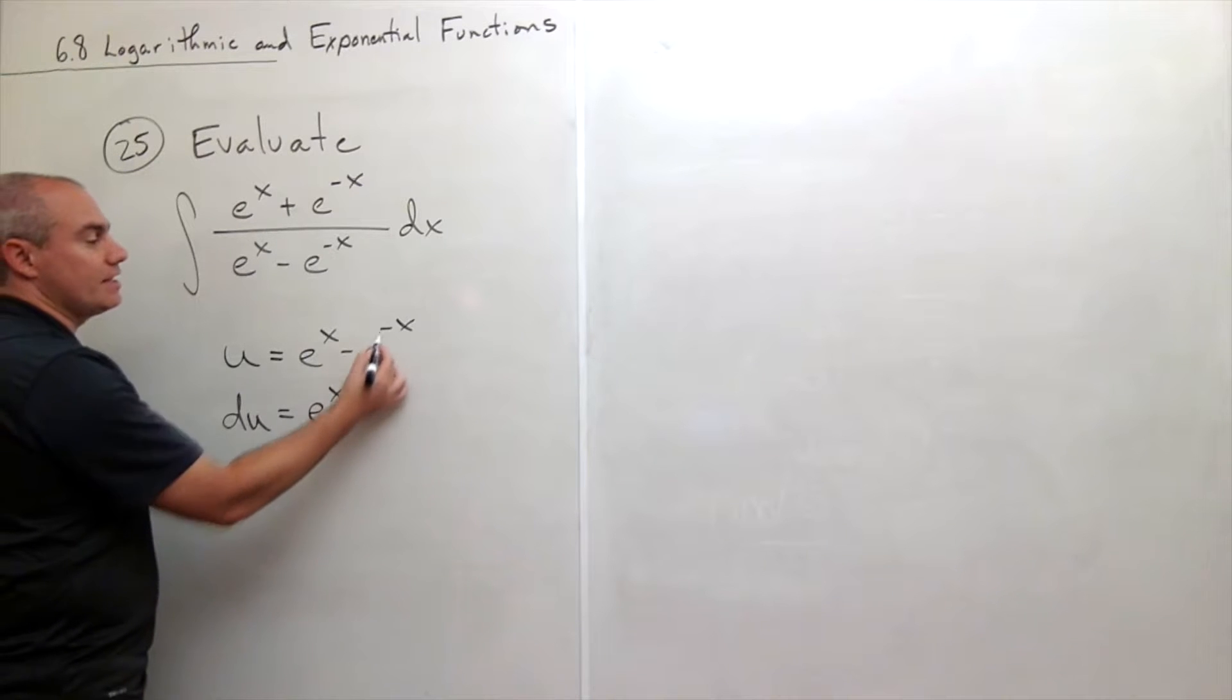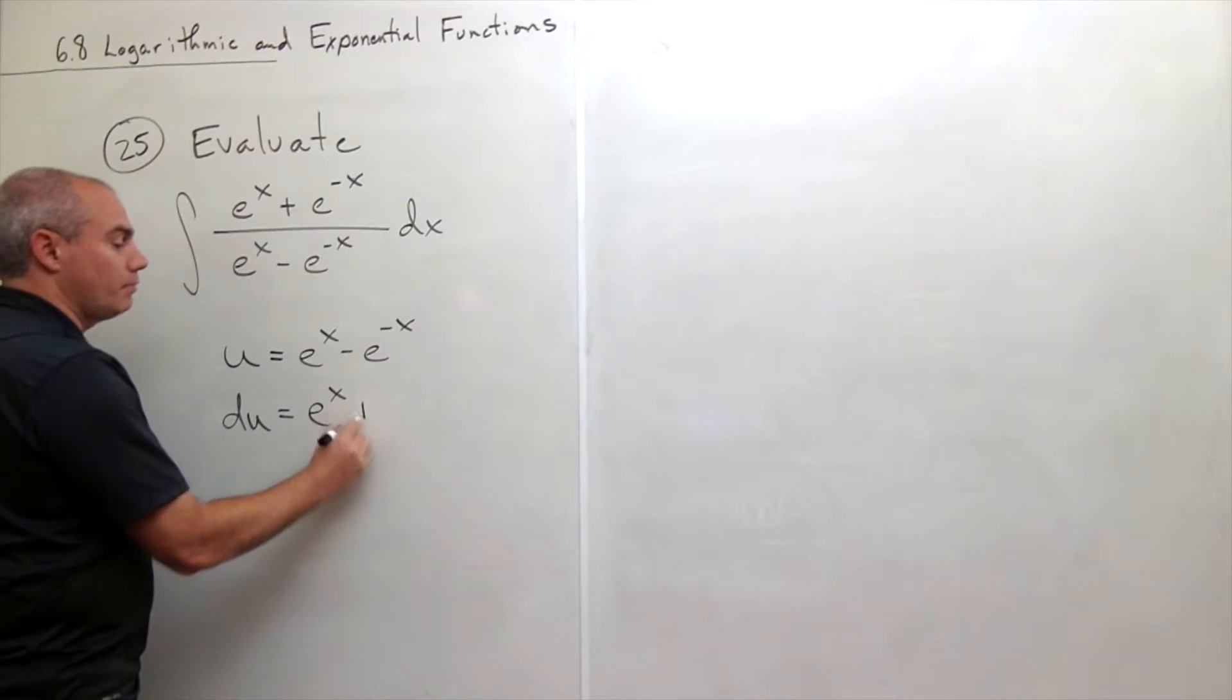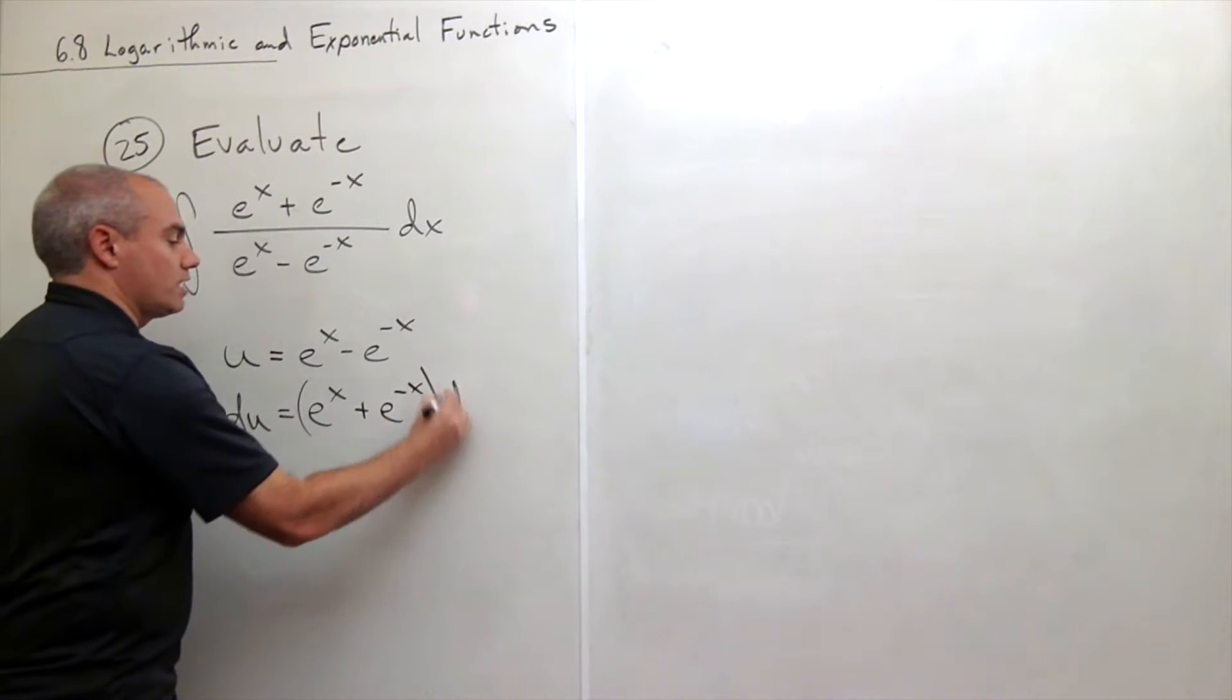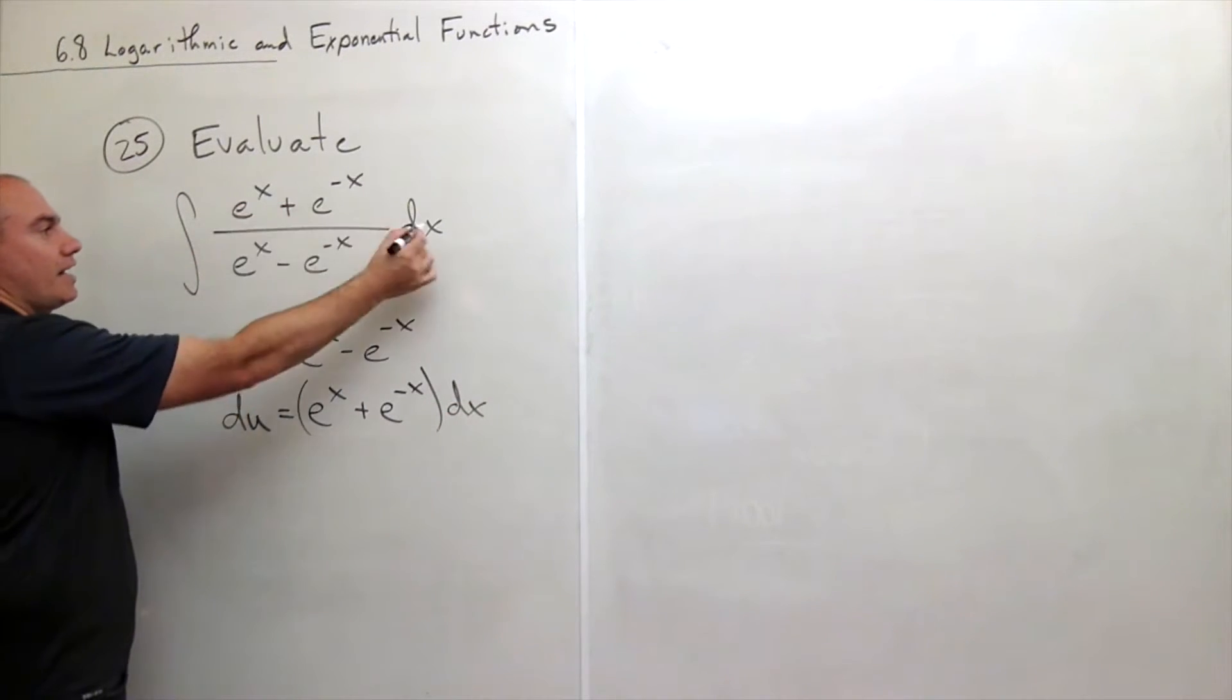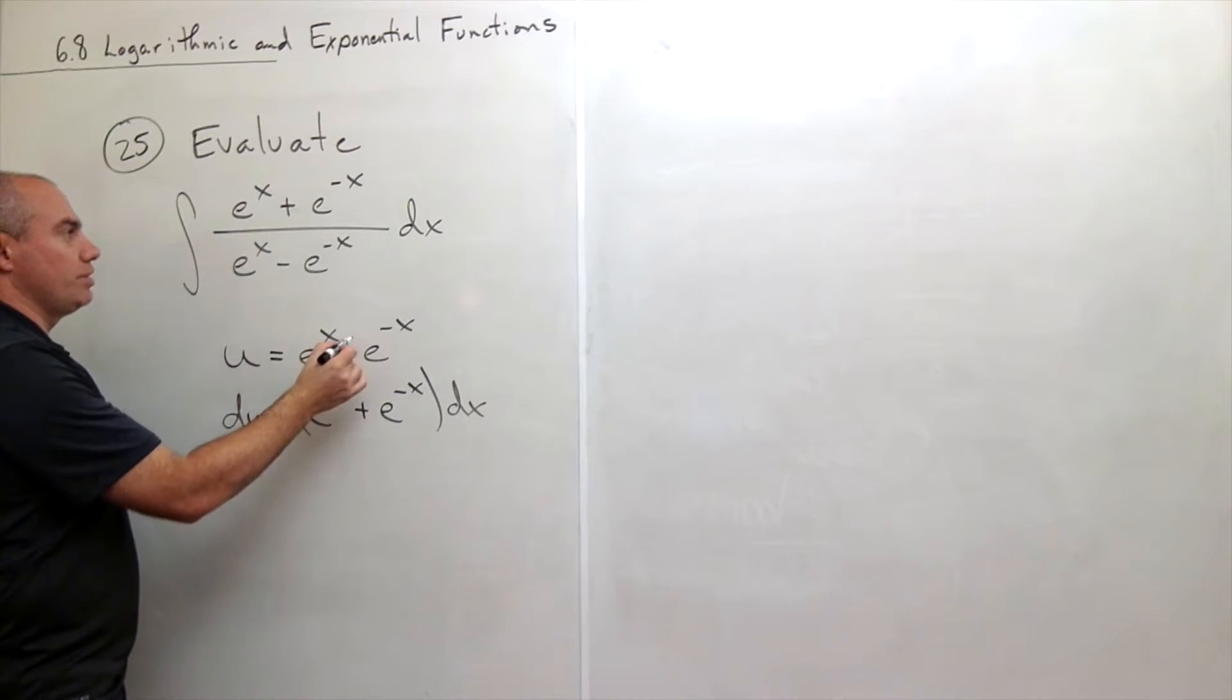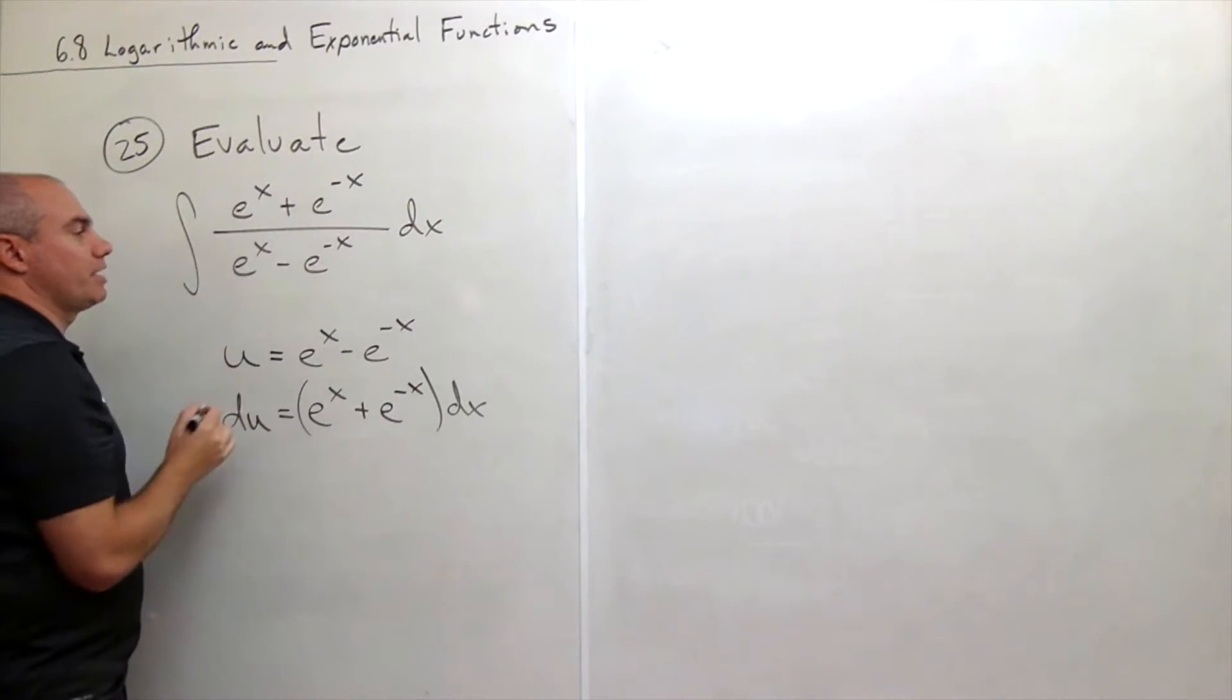and the derivative of minus e to the minus x is plus e to the minus x times dx, which is exactly what we have on the top here. So the bottom becomes u, the top becomes du.